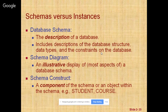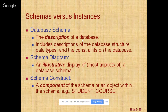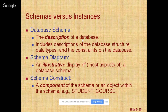Here we define schema, instance, and database state. In any data model it is important to distinguish between the description of the database and the database itself. The description of the database is called the database schema, which is specified during database design and is not expected to change frequently.